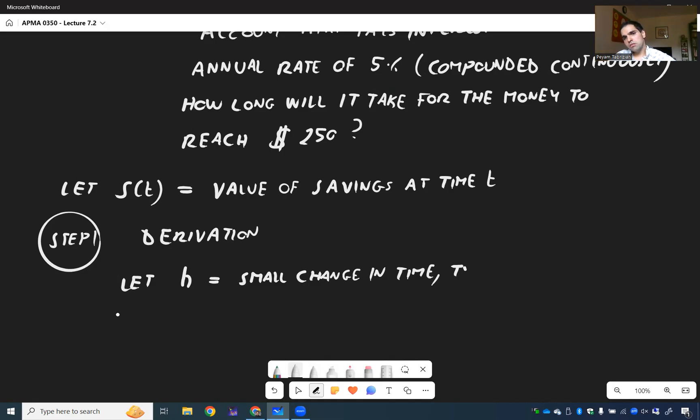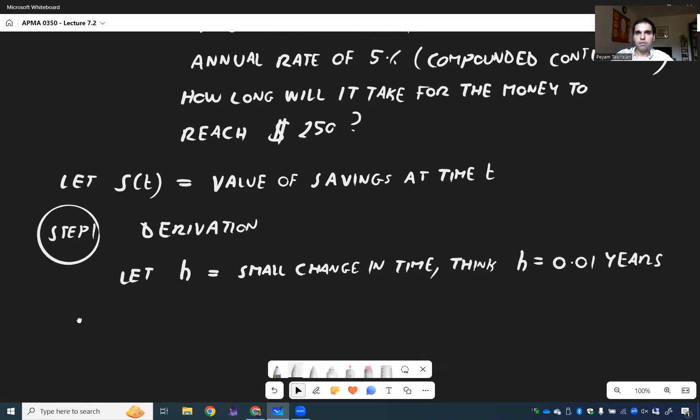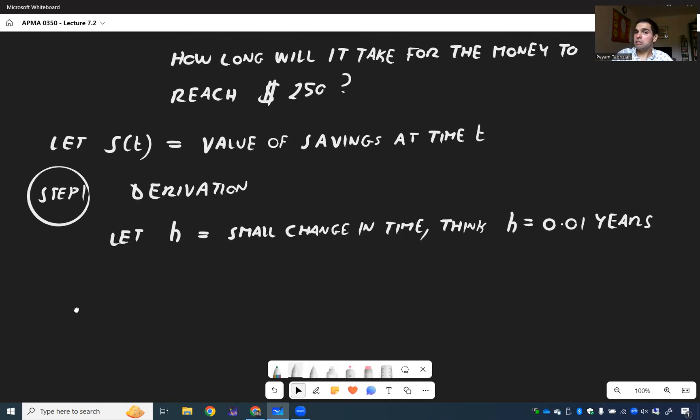I think h is 0.01 years. Because the idea is then we want to let h go to 0 to get a derivative. Now, if you wait 0.01 years, let's see what happens to your savings.